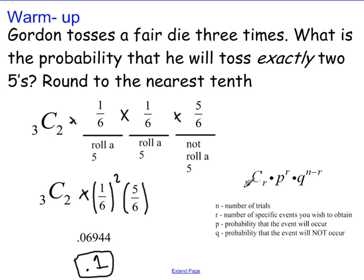So if you just wanted to use the formula for the warm-up, N would be 3. R would be 2. P would be 1 out of 6. And Q would be 5 out of 6.